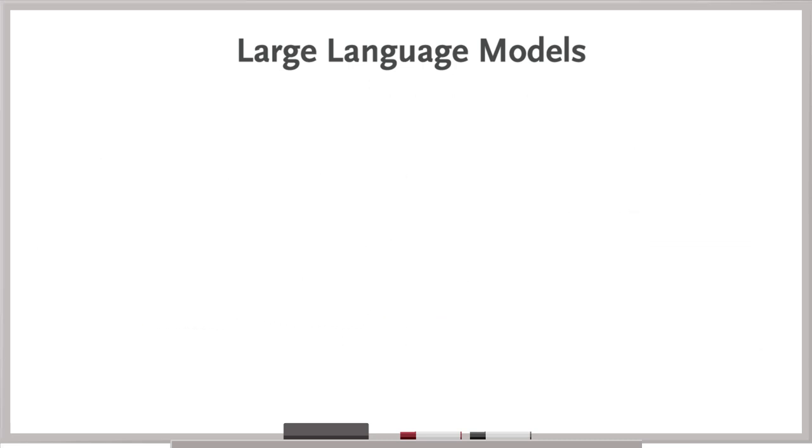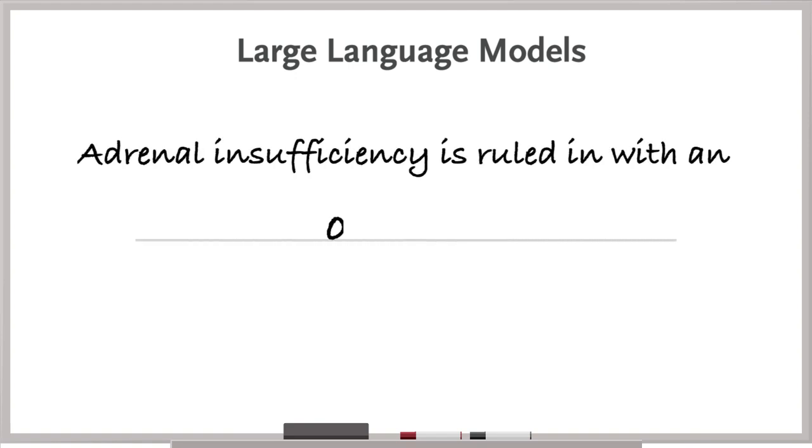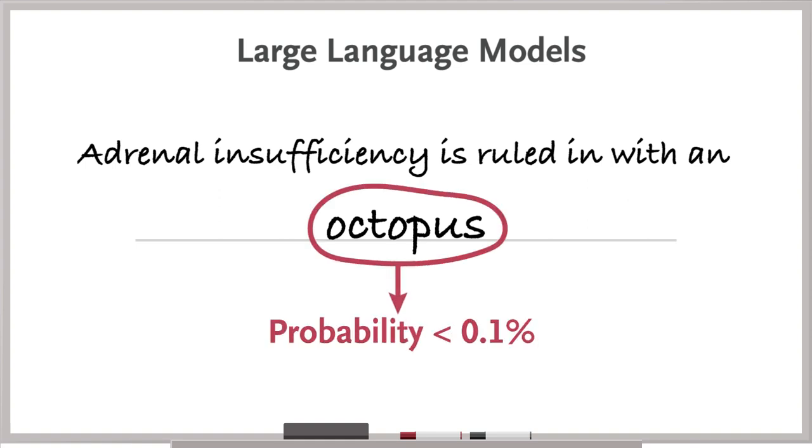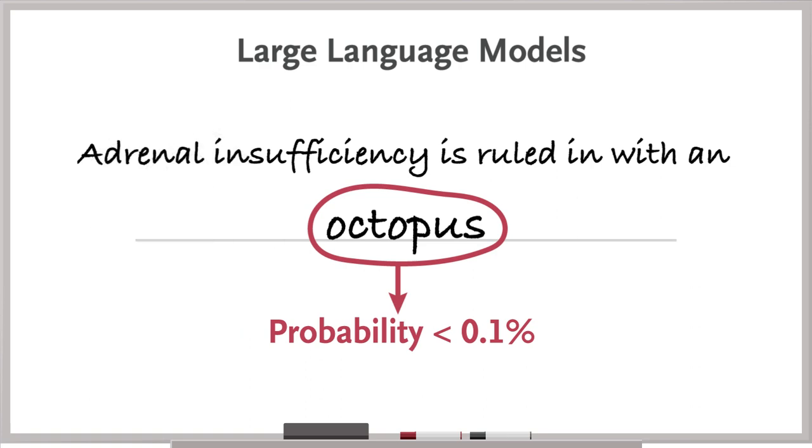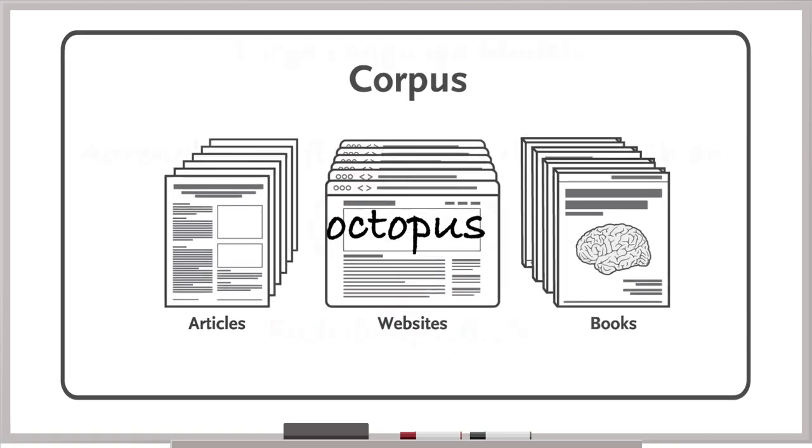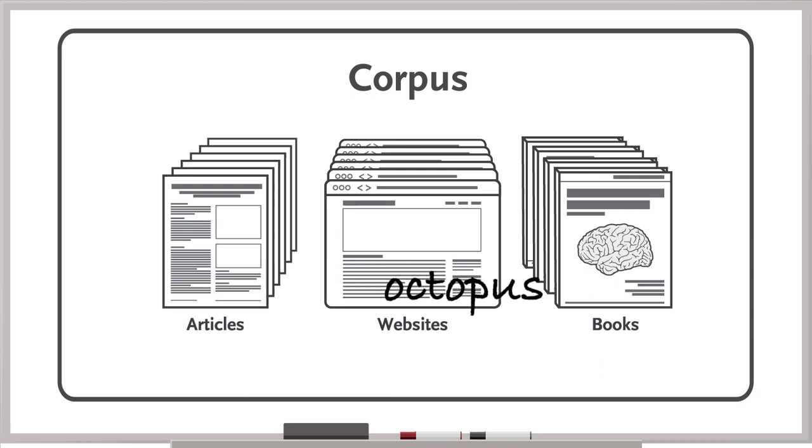It starts by guessing an answer at random. Adrenal insufficiency is ruled in with an octopus. It searches its corpus and assigns a probability indicating how often the word octopus, or other possible answers, followed the given prompt. At first, such a model doesn't work well at all, but it learns by comparing its initial answers with its corpus. Soon, it reliably selects from the corpus the word that has the highest probability of coming next.